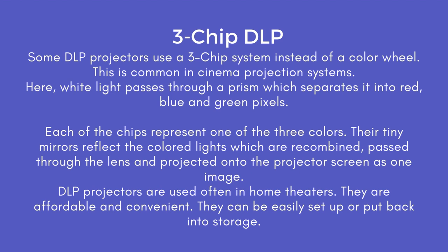3-chip DLP: Some DLP projectors use a three-chip system instead of a color wheel. This is common in cinema projection systems. Here, white light passes through a prism which separates it into red, blue, and green pixels. Each of the chips represents one of the three colors. Their tiny mirrors reflect the colored lights, which are recombined, passed through the lens, and projected onto the projector screen as one image. DLP projectors are used often in home theaters — they are affordable, convenient, and can be easily set up or put back into storage.